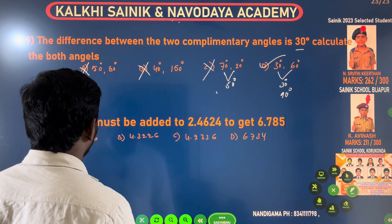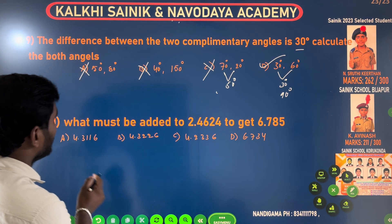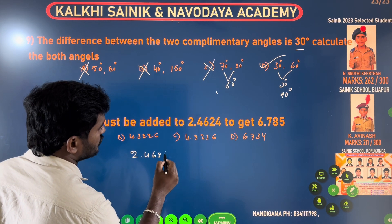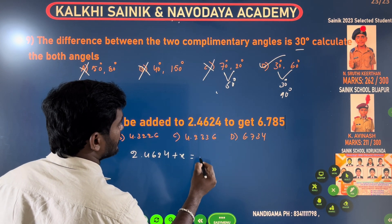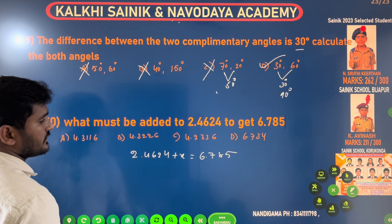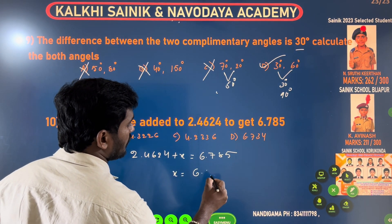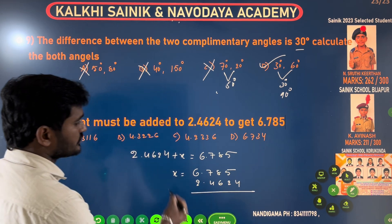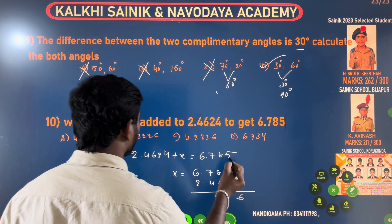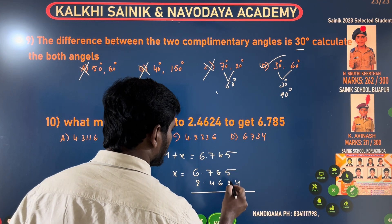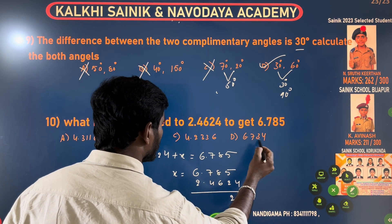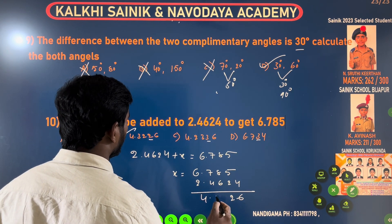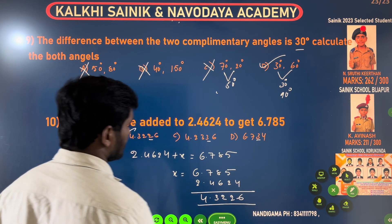What must be added to 2.4624? This number will be added to 2.4624, making it 3.4624, then 4.322.